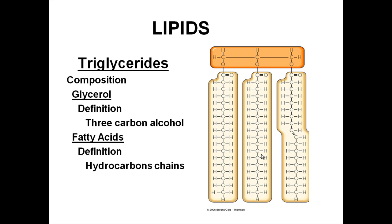There are three main types of lipids. The first one I want to introduce are the triglycerides. They are called triglycerides because they have three fatty acids, and those three fatty acids are connected to a three-carbon structure called a glycerol. So the two main parts of a triglyceride are glycerol and the three fatty acids. You can see the three fatty acids are just long chains of carbon.